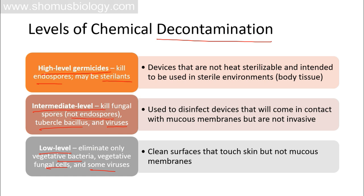High level germicides, or sterilants, can always kill endospores. To kill spores we need to use high level germicides or chemical agents. Devices that are not heat sterilizable and intended for use in sterile environments like body tissue cannot be put in high temperature, so we use chemical sterilants. Intermediate level germicides are used for devices that contact mucous membranes but are not invasive, and low level germicides clean surfaces that touch skin but not mucous membranes.